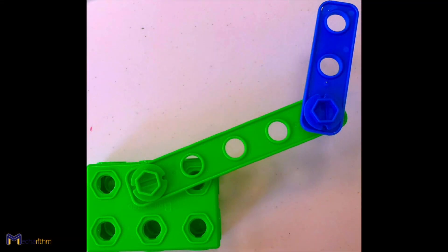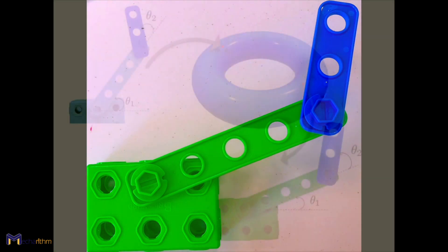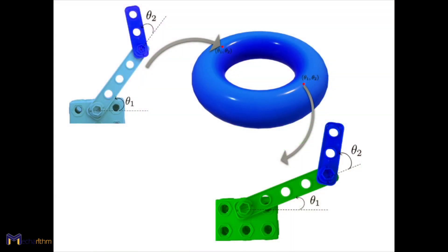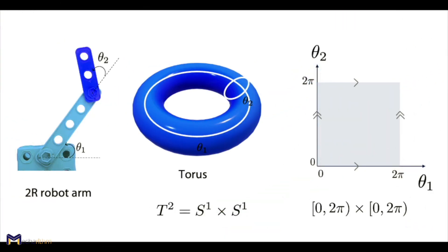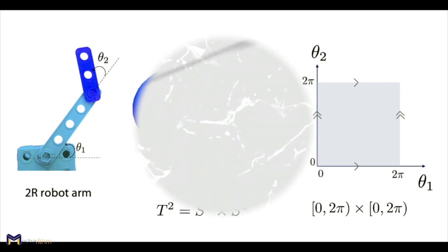Hi, everyone. Welcome to the second lesson on Fundamentals of Robotics. Today's lesson is about the configuration of the robot. We will talk about the configuration space and topology of the configuration space, and finally, different ways to represent the configuration space.